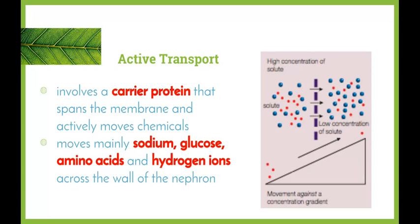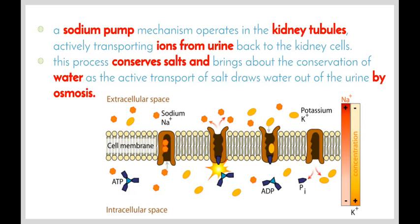As we can see in the picture, there is an opposite movement of substances — solutes move across from where there are few of them to where there are more of them. A sodium pump mechanism operates in the kidney tubules, which actively transports ions from the urine back into the kidney cells. This process helps to conserve salt and brings about conservation of water, as the active transport of salt draws water out of the urine by osmosis — once the salt is drawn out, it changes the water concentration and water then moves out through osmosis.